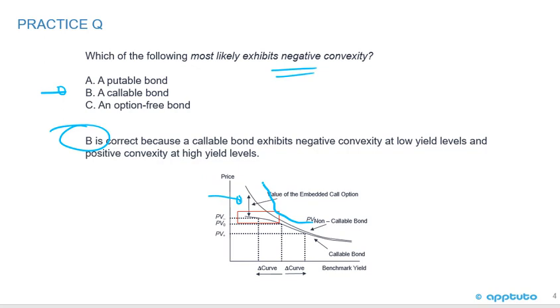That is positive convexity there, and as we saw with the putable bond, there's still convexity — the putable bond's curve was above the option-free bond. An option-free bond still shows convexity. So A was wrong and C was wrong. It's the callable bond that has negative convexity, where the curve starts to change shape and move toward the price at which the bond would be called.